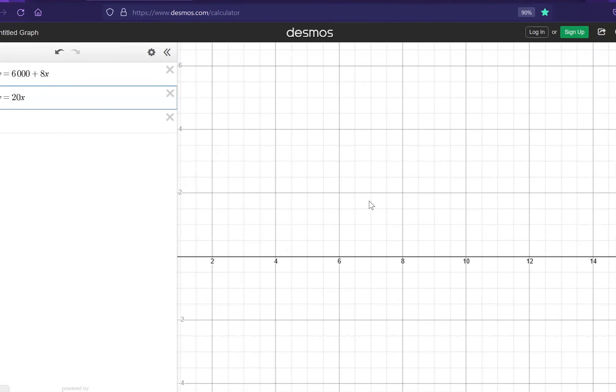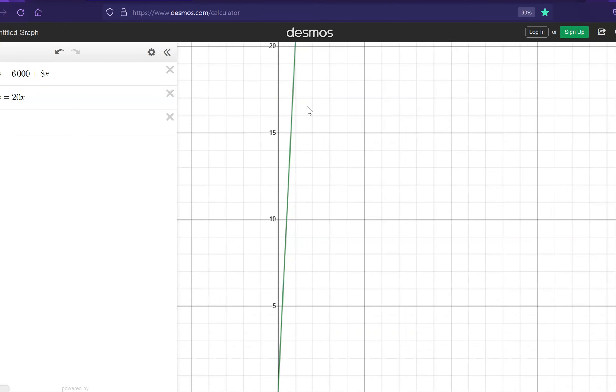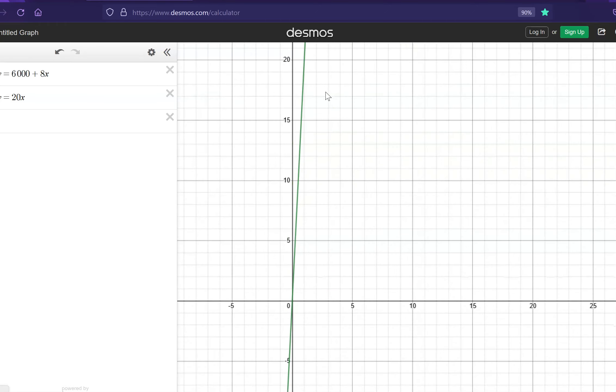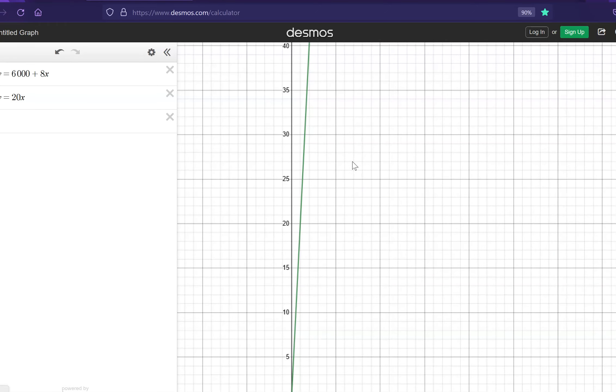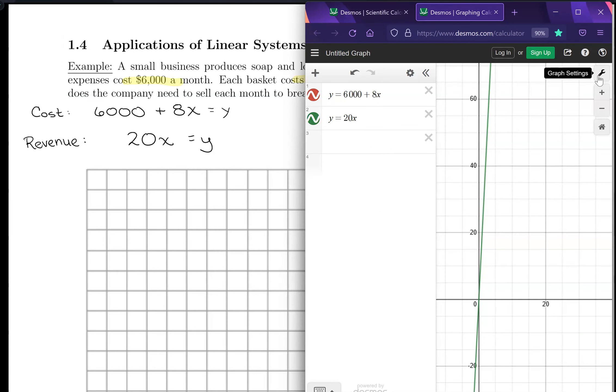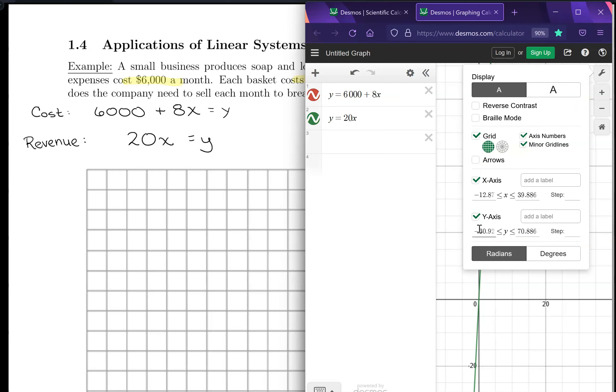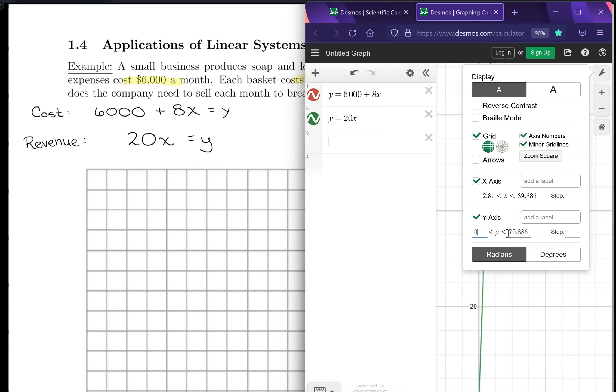And I can't see anything on the graph right now. Oh, there's my y equals 20x. But basically, my 6,000 plus 8x is huge. So I need to adjust it so I can actually see that intersection point. So what I'm going to do is there's this little wrench in the upper right-hand corner called graph settings. I'm going to open that up, and I'm just going to adjust my axes. So y-axis, I want to see at least to 6,000. So let's go ahead and start the graph. We can stick to having the y-axis start at 0. But let's have it go up to 7,000. We'll see how that does.